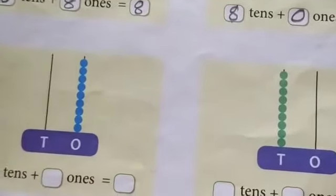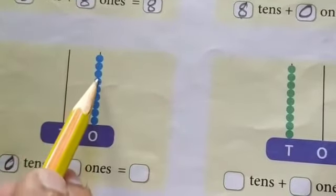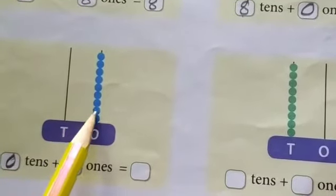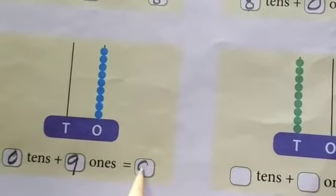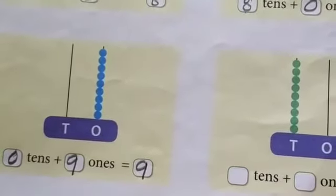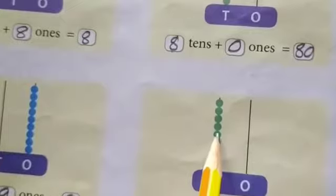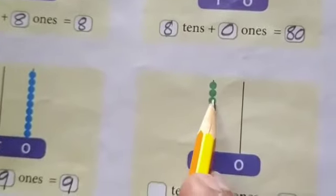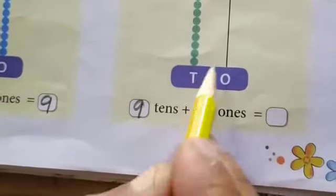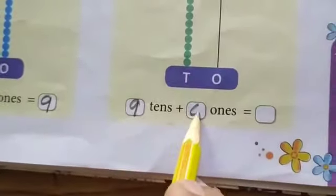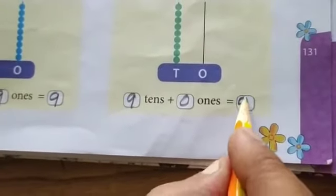Here, zero tens and nine ones. Nine ones is equal to nine only. Here, nine tens and zero ones. Nine tens means ninety.